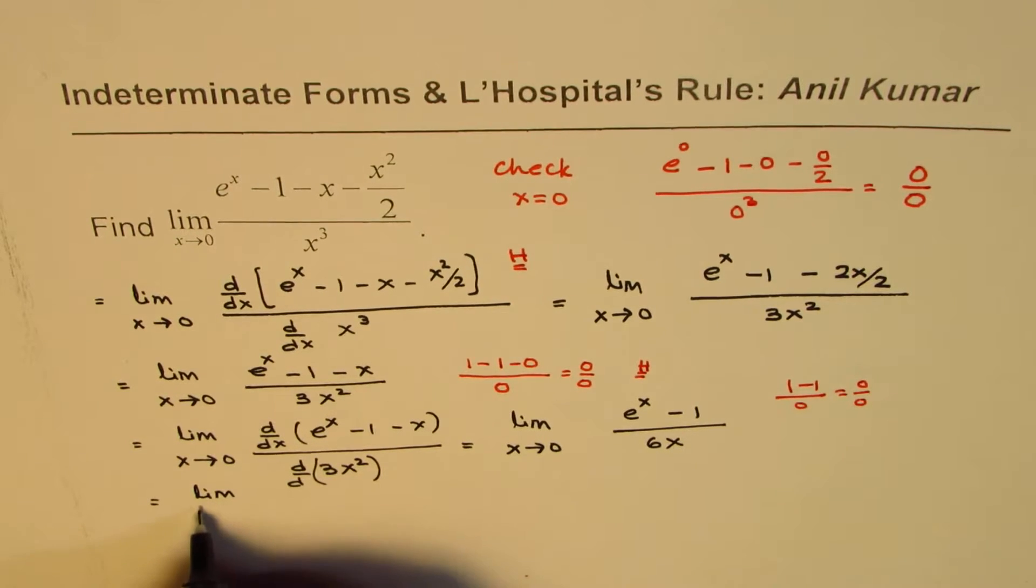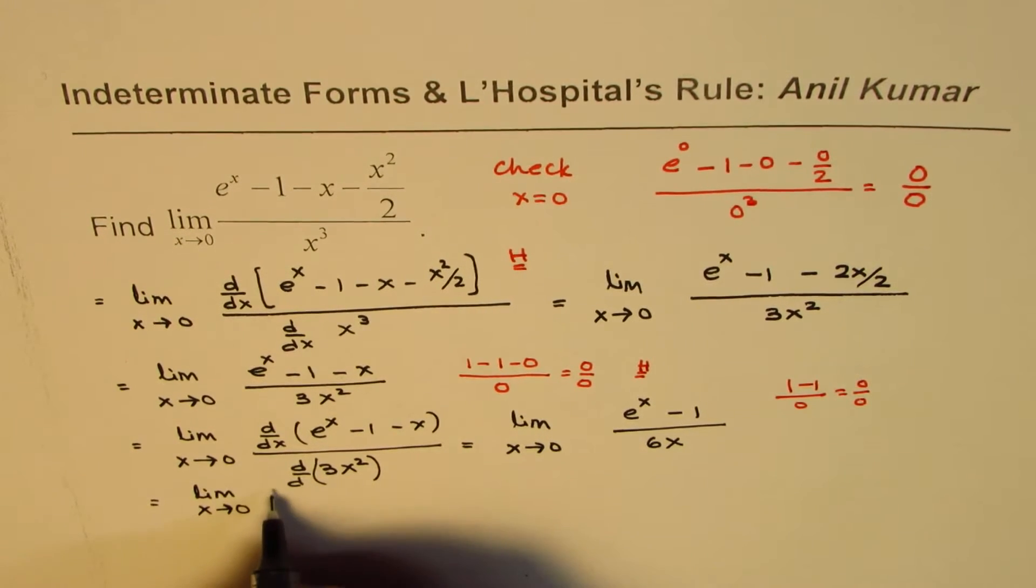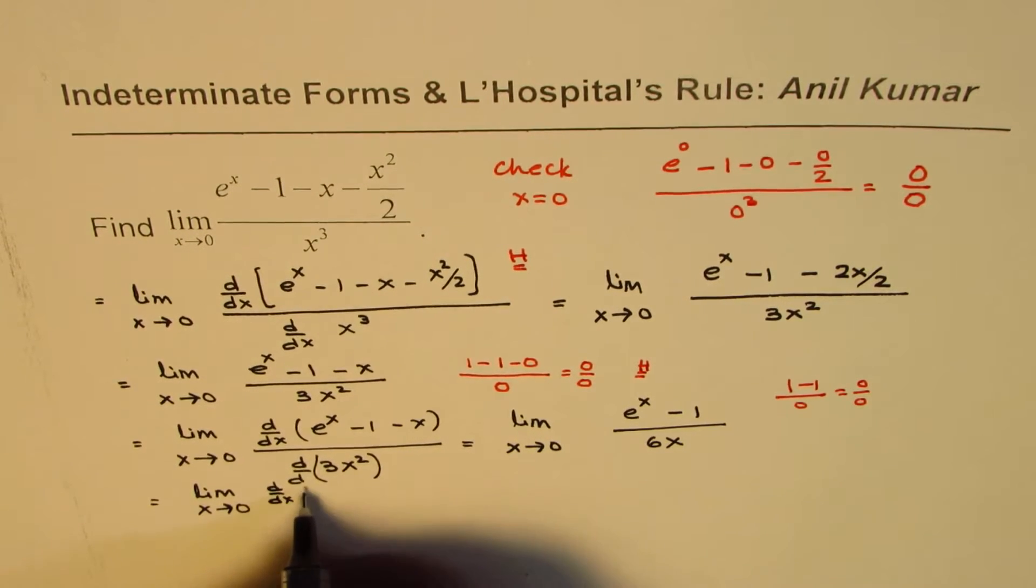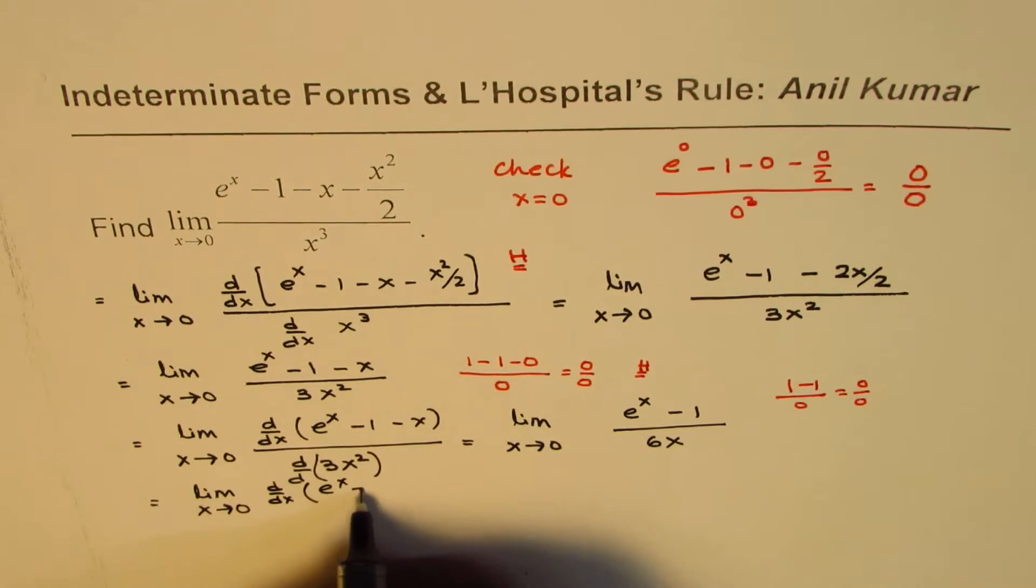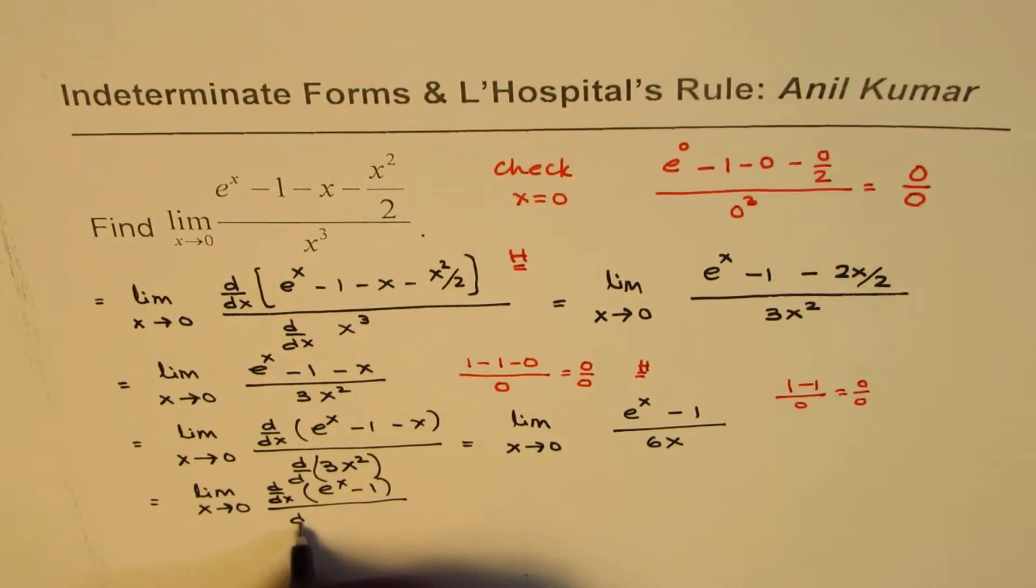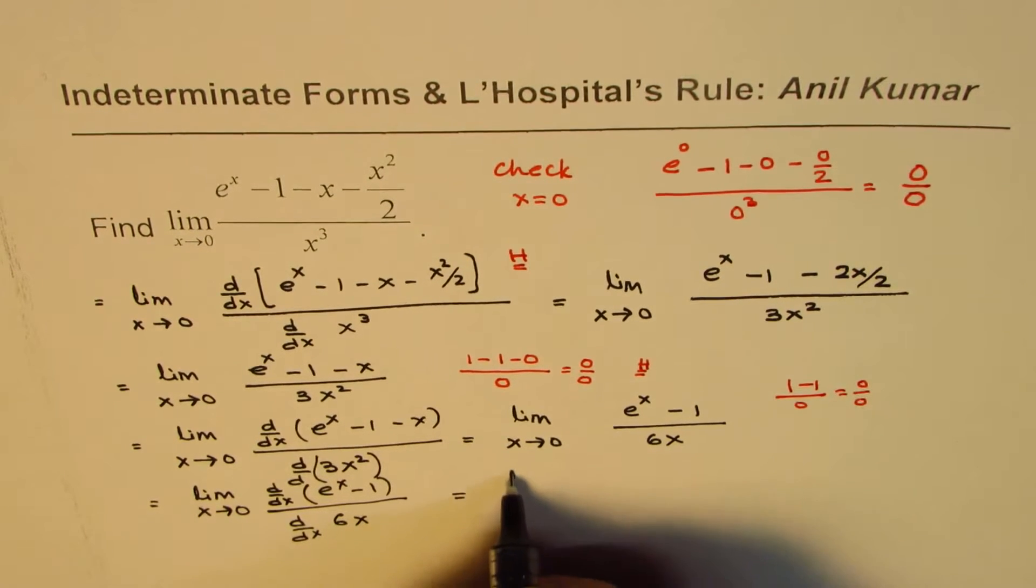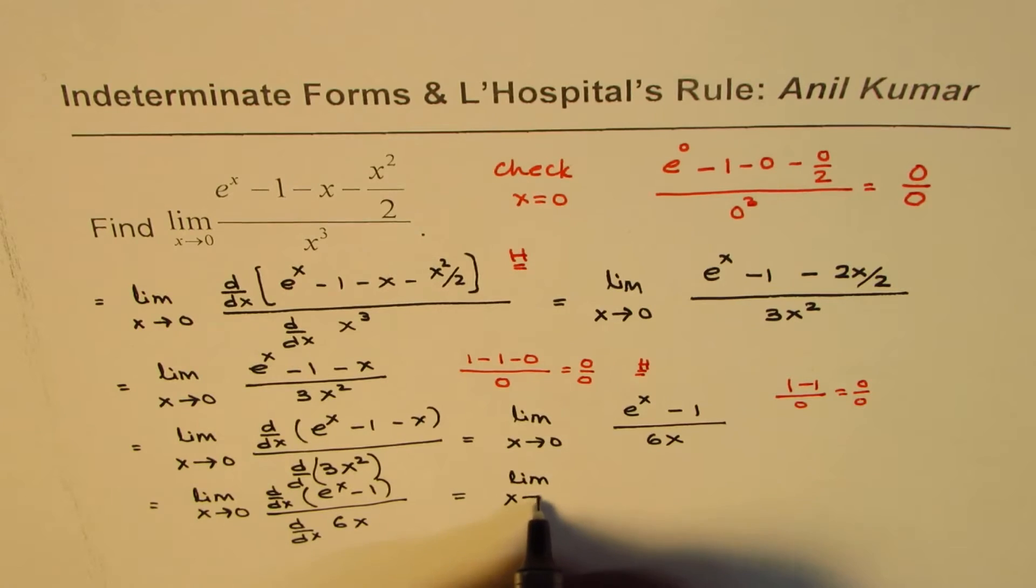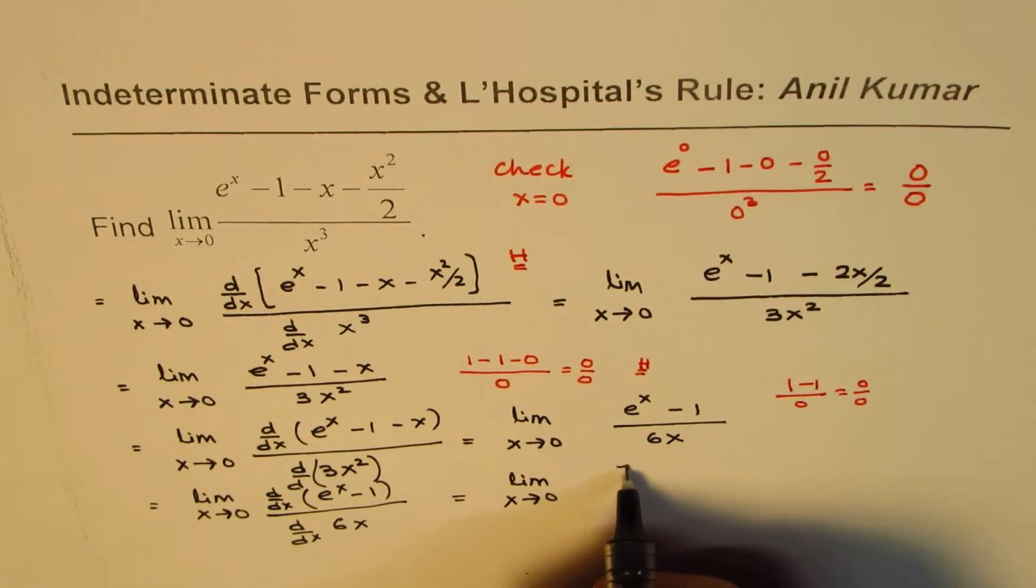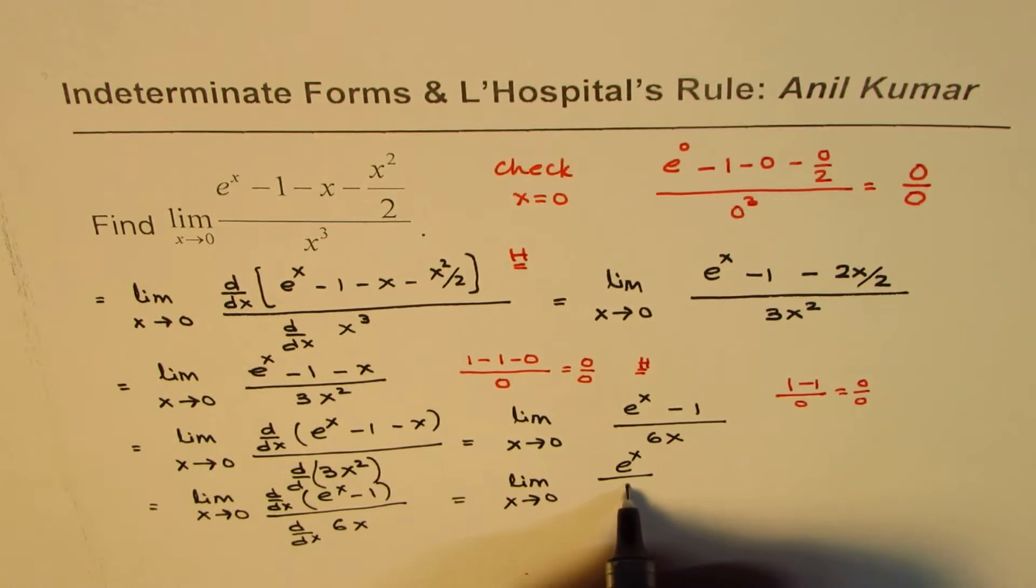We get limit x approaches 0, derivative of e to the power of x minus 1, divided by derivative of 6x. And that is limit x approaches 0. And this is e to the power of x, divided by 6.